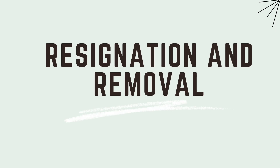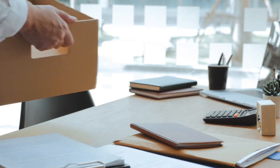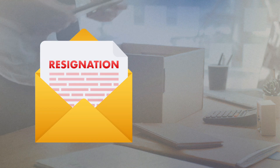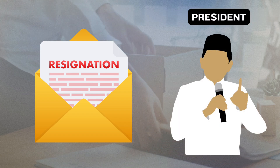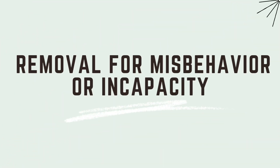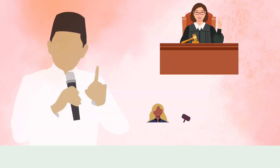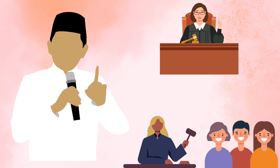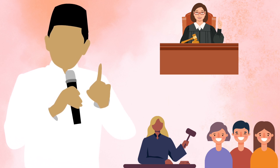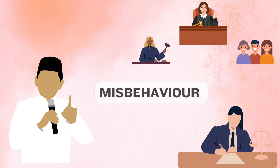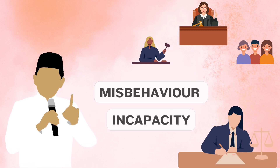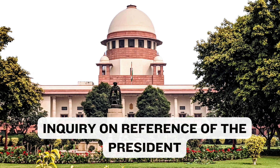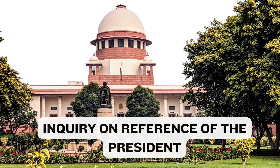The chairperson or any member may resign from their office by submitting a written notice of resignation addressed to the President of India. The chairperson or any member can be removed by an order of the President of India on the grounds of proved misbehaviour or incapacity. This removal can only occur after the Supreme Court conducts an inquiry following a reference made to it by the President.